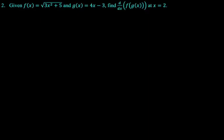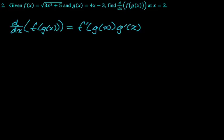Given f of x equals the square root of 3x squared plus 5 and g of x equals 4x minus 3, we want to find d dx of f of g of x at x equals 2. All right, so we know that the derivative of f of g of x is just f prime of g of x, g prime of x. That is the chain rule. So definitely we know that.